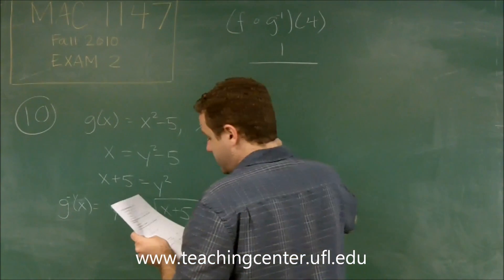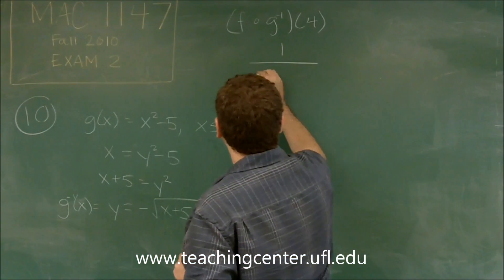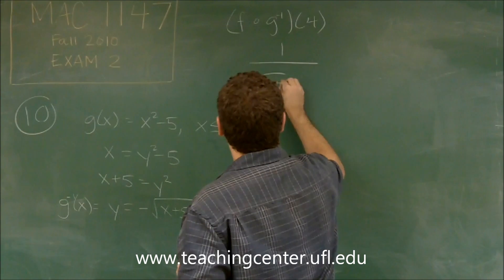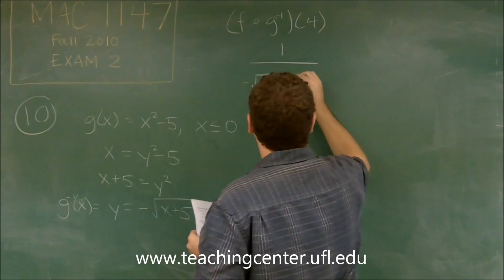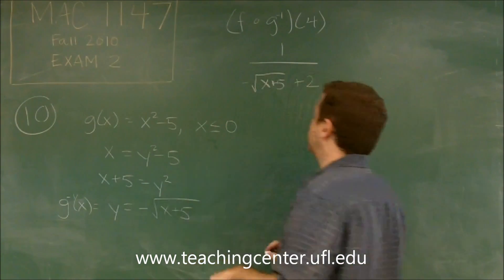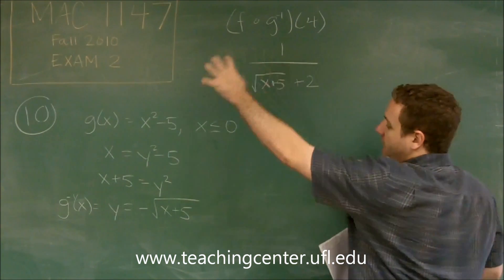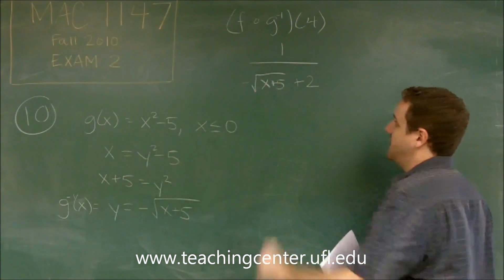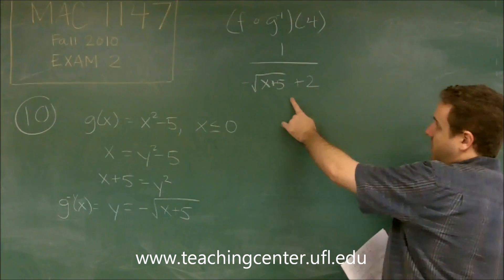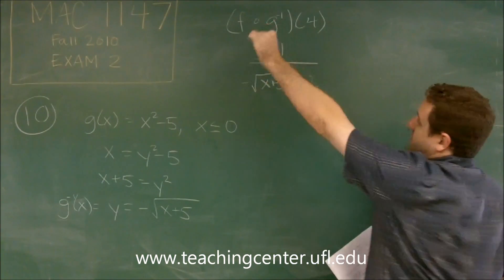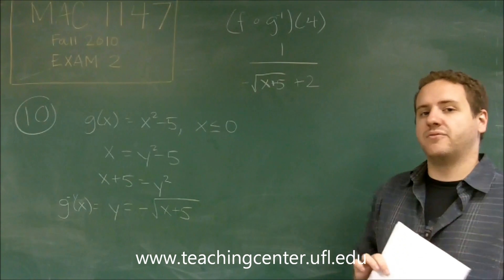which we have right here. So instead of x, we'll write negative square root of x plus 5. Then we just put the plus 2 that was part of the f function. So what we did was we took the x that was in f, and we put this entire function in instead. So what I've written right here is f of g inverse, and now we're supposed to evaluate that at 4,